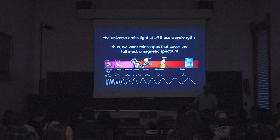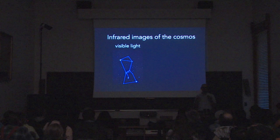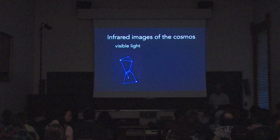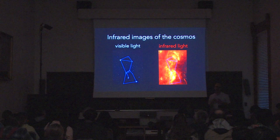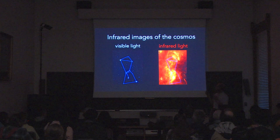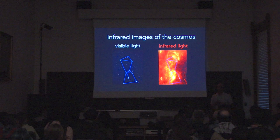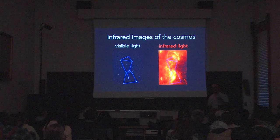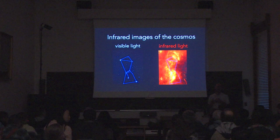Infrared light tells us something very different than what we see in visible light. This is Orion, a very famous constellation — that's what it looks like when we look at it. But if you had infrared eyes, you'd also see this cool gas permeating everywhere. The Orion region is where there's a lot of cool gas and dust collapsing to form new stars. With modern infrared technology, we can see much more than we can with our own eyes.